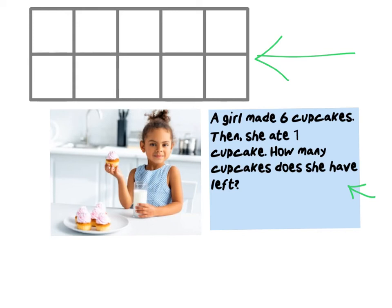Before you start drawing, let's circle our numbers so that we know what we're working with. We have six cupcakes in the beginning. She made six cupcakes. Then she ate one cupcake.